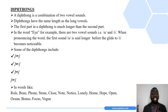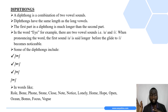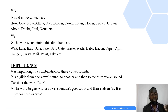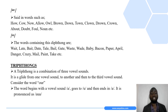The list is endless, but looking at those words, you realize that there is that /oʊ/ sound made up of two vowel sounds. Apart from that, we also have diphthongs with the /aʊ/ sound, as in words such as how, cow, now, allow, owl, brown, down, town, clown, drown, about, doubt, foul, and noun.